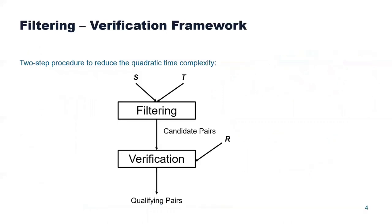To address this task, most works in the literature follow the filtering-verification framework, which consists of two steps. The first is filtering, which receives the input data and reduces the search space by excluding pairs of geometries unlikely to satisfy a given topological relationship, producing a set of candidate pairs. Verification then considers only these pairs to produce the set of qualifying pairs that satisfy relation R.